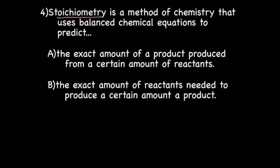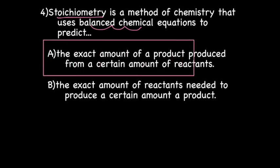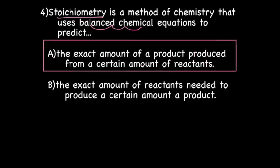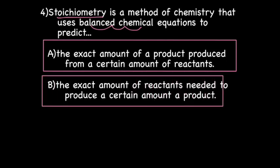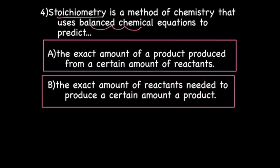Stoichiometry is a method of chemistry that uses balanced equations to predict the exact amount of product produced from a certain amount of reactants, the exact amount of reactants needed to produce a certain amount of products, and if you know the amount of one reactant, you can predict how much you need of another. Stoichiometry uses mathematical calculations to predict how much product or reactant is needed or produced.